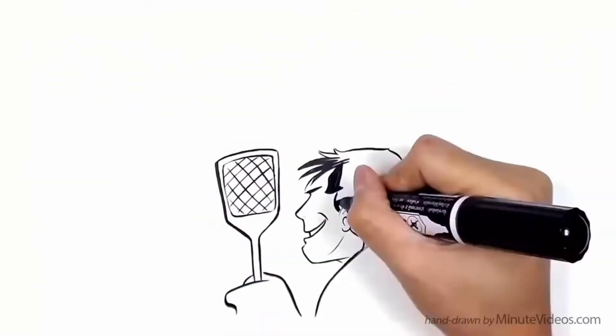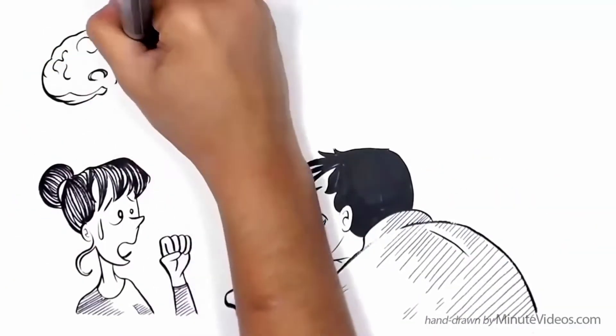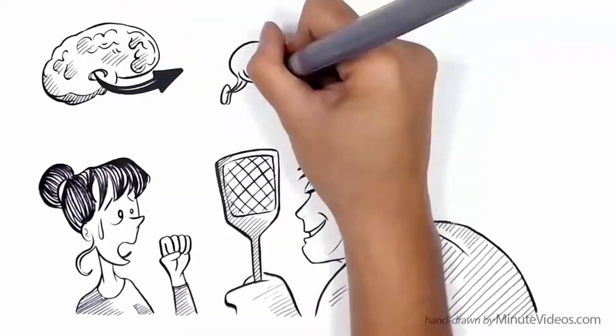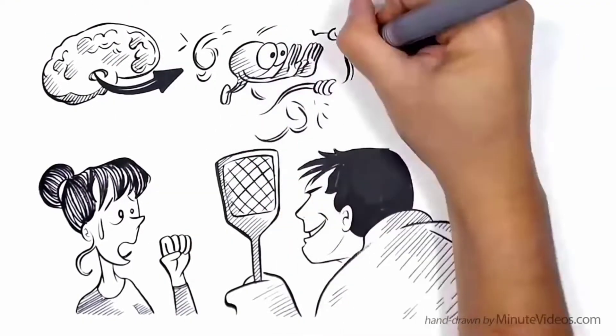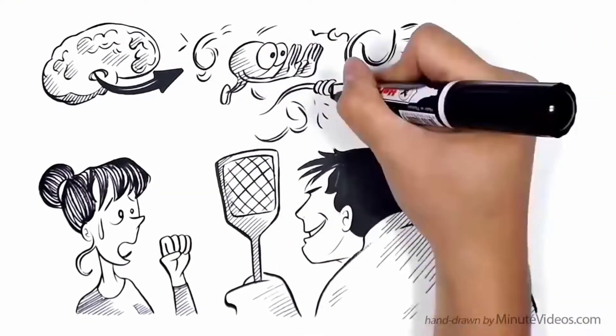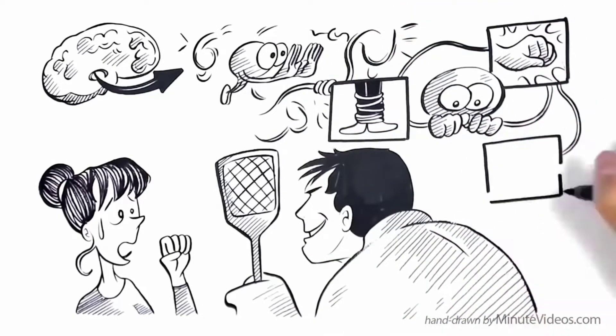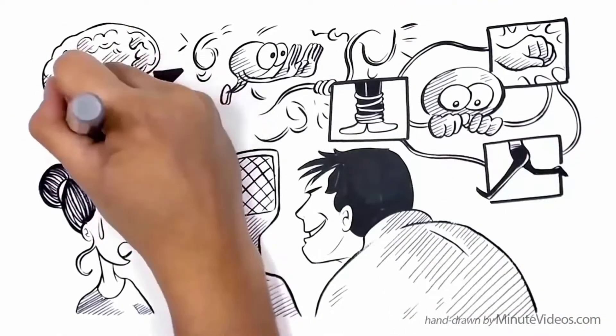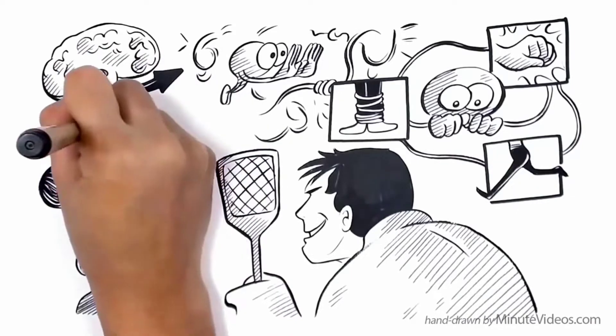When it gets dangerous, a specific region of our brain, the amygdala, takes over. Its job is to protect us and save our life. To act fast, it refrains us from thinking and leaves us with only those three options. This makes creative and critical thought processes impossible.